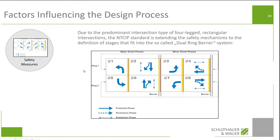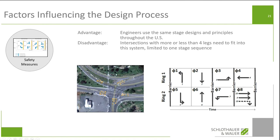This is based on the fact that most intersections in North America are four-legged and look the same, so they use the same control schemes. The problem is as soon as you have more than four legs, you need to make it fit into the system somehow. In this case, the solution is to introduce another barrier and put the stream of the fifth leg together with movement eight. It works, but you are limited to the same stage sequence.